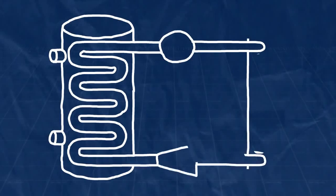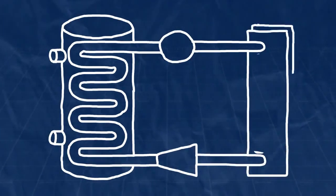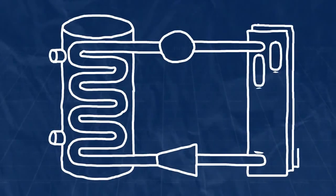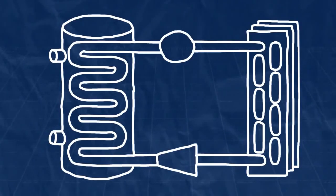As it cycles through the system, the refrigerant undergoes variations in temperature and pressure, as well as alternating between liquid and vaporous states. Let's examine the four stages in one complete cycle.